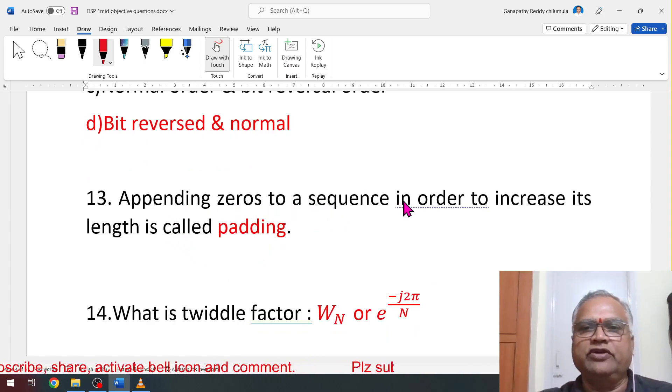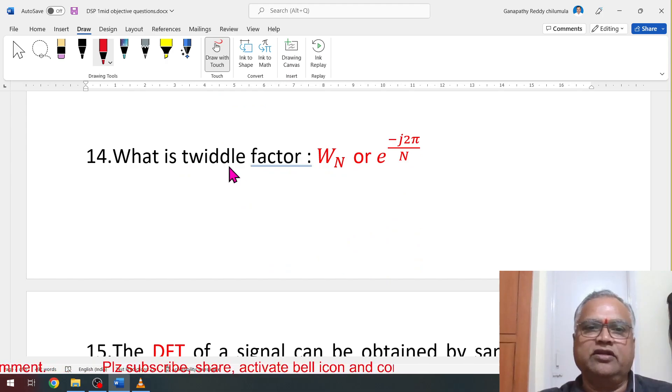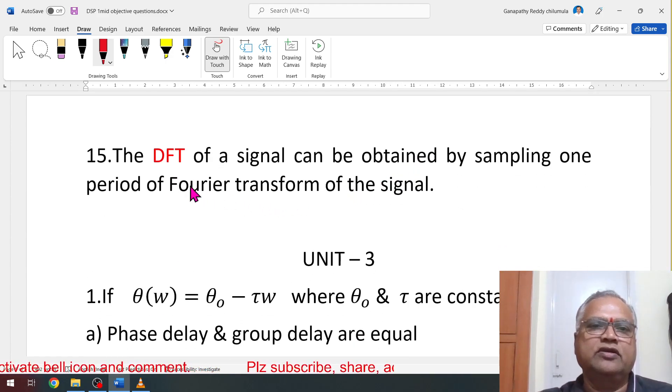Appending zeros to a sequence in order to increase its length is called padding. What is twiddle factor? The DFT of a signal can be obtained by sampling one period of Fourier transform of a signal. From the Fourier transform, we take the samples that is called as DFT.